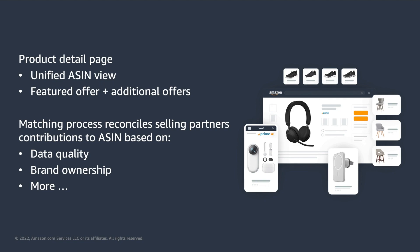One frequent question from selling partners submitting listings to Amazon is how to influence the data that is displayed at the ASIN level. What's behind the process that selects which data ends up in the unified ASIN view? How does it work? What is taken into consideration? This process, called matching, reconciles data from all selling partners' contributions to generate the ASIN data. Some factors that are considered in order to select the data are the quality of the submitted information, the brand ownership of the selling partner, and more. Something important to mention is that Amazon owns the matching process and data selection, and selling partners can't directly influence this. However, submitting high-quality data increases the chances of getting their information selected.